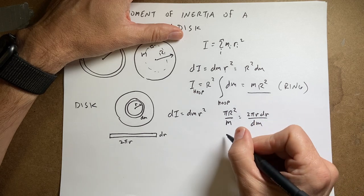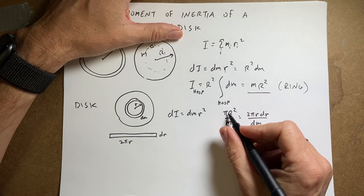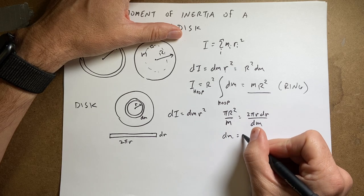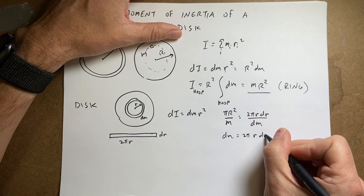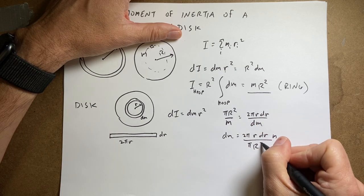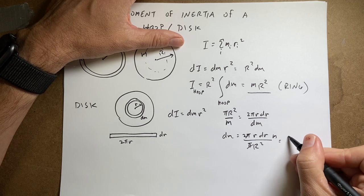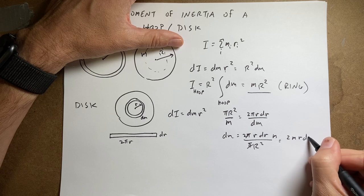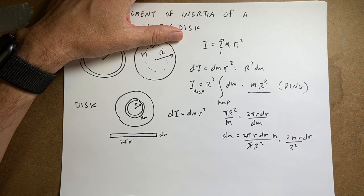Now I can solve this for dm. I can multiply both sides by dm, divide both sides by π r squared, multiply both sides by m, and I get dm equals 2π r dr m over π r squared. So the πs cancel. Let's write this as 2m r dr over R squared. The capital R is a constant.